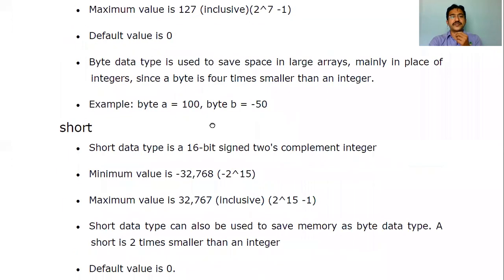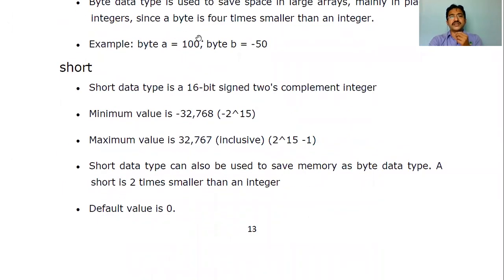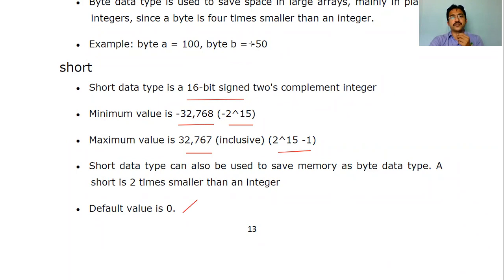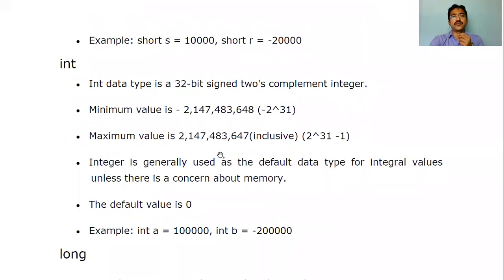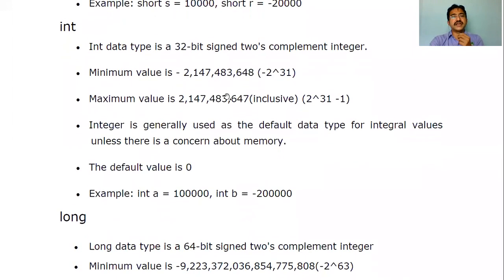The second data type is short — it is two bytes, which is 16 bits, a signed two's complement integer. The range is -2^15 to 2^15 - 1, which is -32768 to +32767. The default value for short is zero. Please try to remember the size, the range, and the default value for each data type.